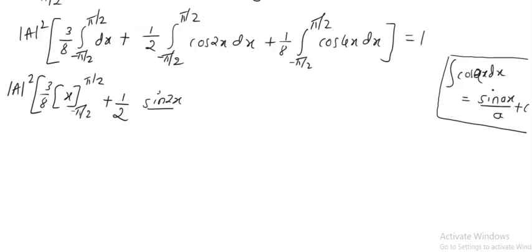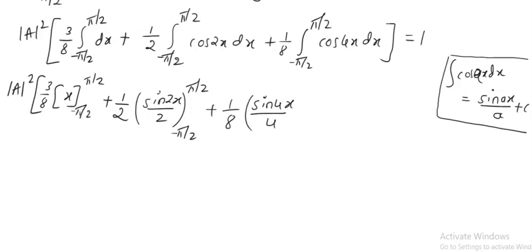The limit for sin 2x divided by 2 is minus pi by 2 to plus pi by 2. Integration of cos 4x is sin 4x divided by 4, with limit minus pi by 2 to plus pi by 2. This all equals 1.